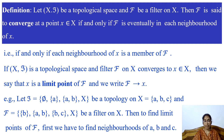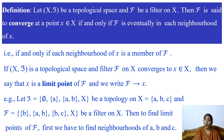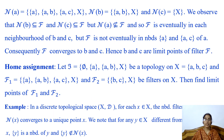Now we discuss an example. Let X consist of 3 points A, B and C, and let T be a topology on X consisting of the empty set, singleton {A}, the doubleton {A, B}, and the whole set X. Let F be a filter on X consisting of singleton {B}, doubleton {A, B}, doubleton {B, C}, and the whole set X. To find limit points of F, we first find neighborhoods of points A, B and C. The collection of all neighborhoods of A, N(A), consists of 4 members: singleton {A}, doubleton {A, B}, doubleton {A, C}, and the set X.